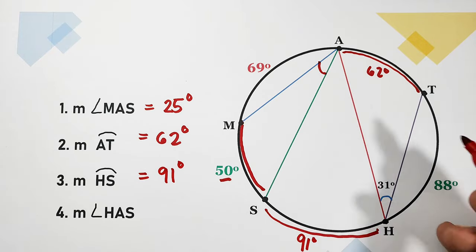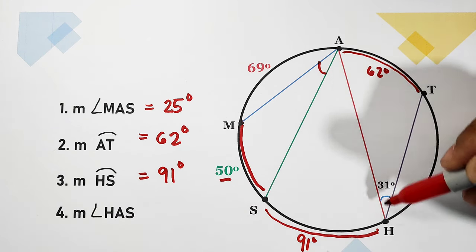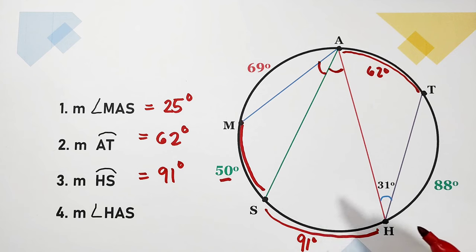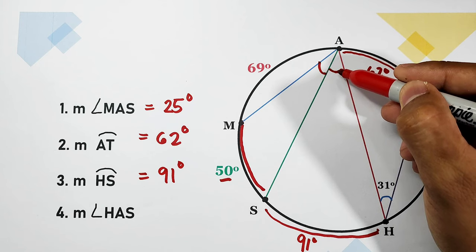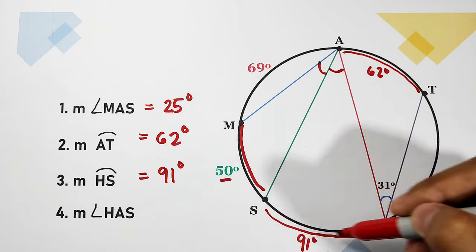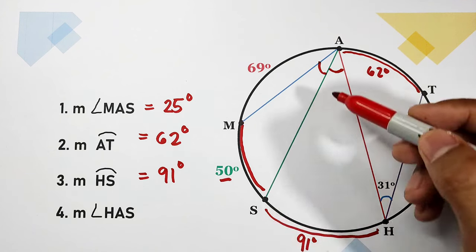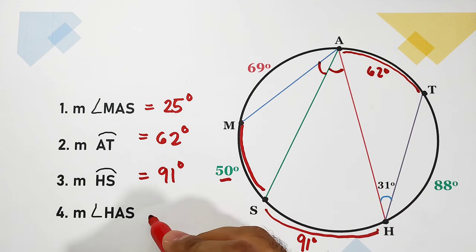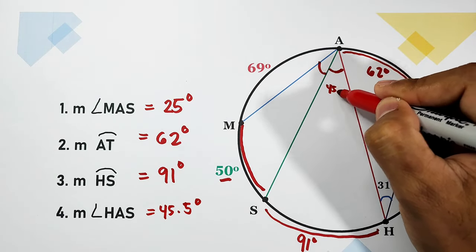Number four: find the measure of angle HAS. The inscribed angle HAS has intercepted arc HS, which is the opposite arc of 91 degrees. The inscribed angle is half of the intercepted arc, so half of 91 degrees equals 45.5 degrees.